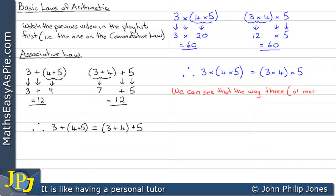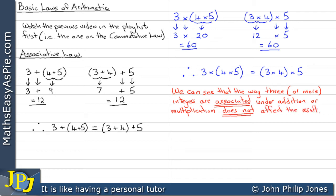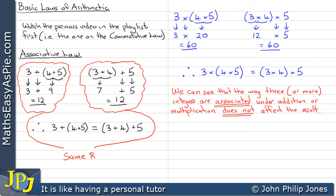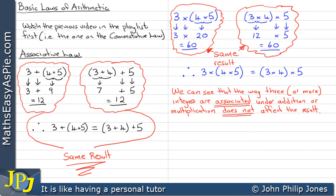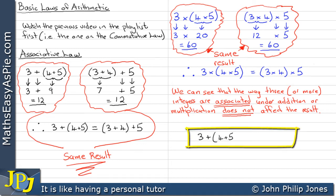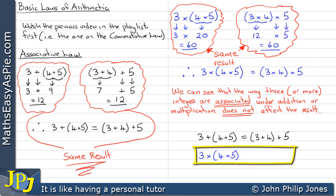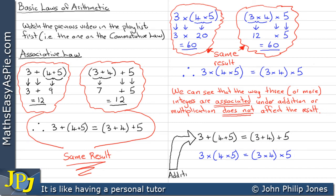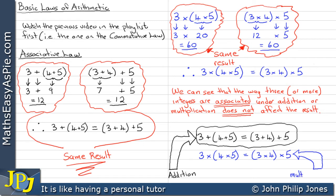We can see that the way 3 or more integers are associated under addition or multiplication does not affect the result. This example is under addition and both give the same result. This example is under multiplication and we again get the same result. So the addition of 3 to (4 plus 5) is the same as (3 plus 4) added to 5, and 3 multiplied by the product of (4 and 5) is the same as the product of (3 and 4) multiplied by 5. This is the associative law under addition and under multiplication.